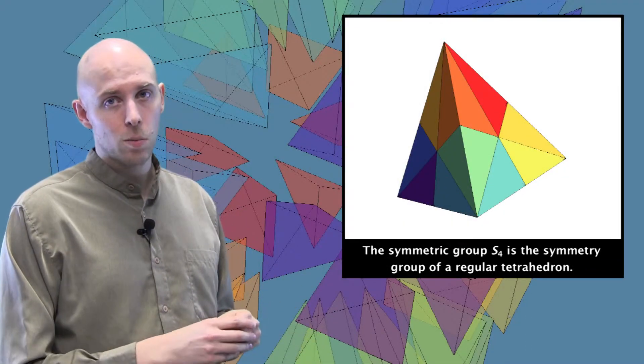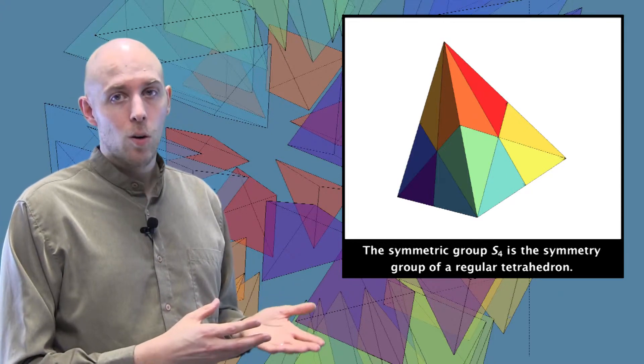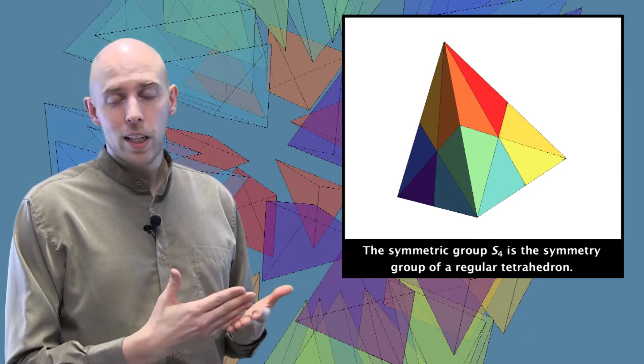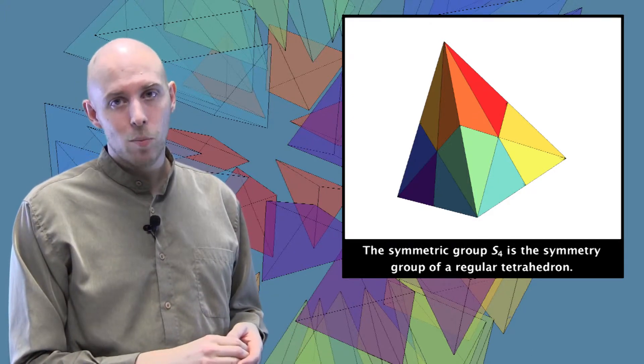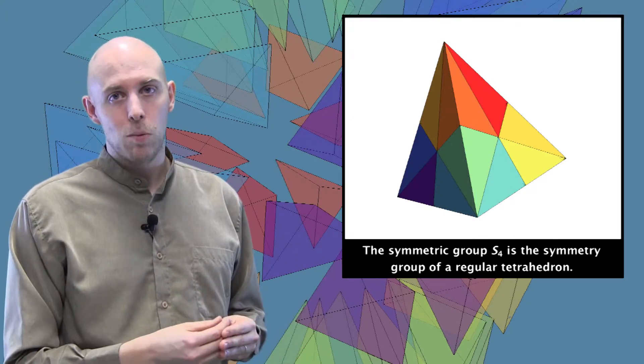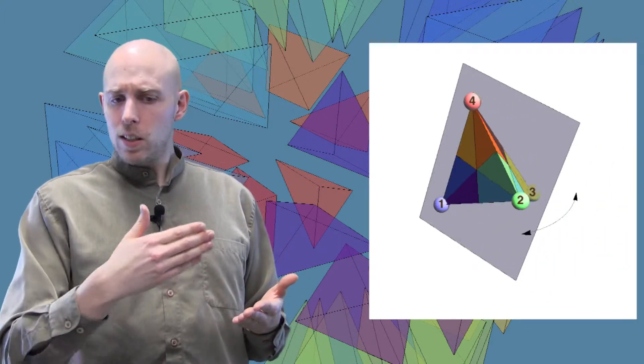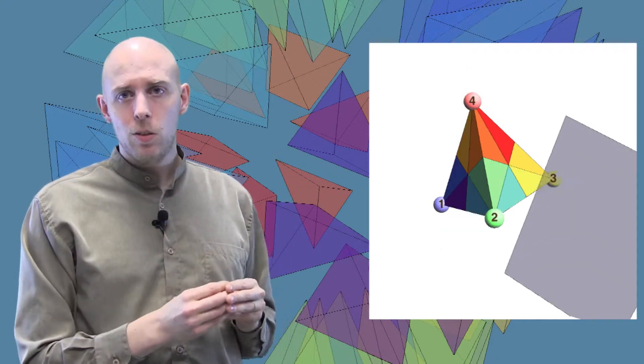The symmetric group S4 is the group of symmetries of a tetrahedron, where now a reflection corresponds to slicing the tetrahedron by a plane and reflecting about that plane. If we label the vertices of a tetrahedron from one to four and then see what happens when we do a reflection, well, the reflection slices through the tetrahedron and changes the position of two of the vertices.